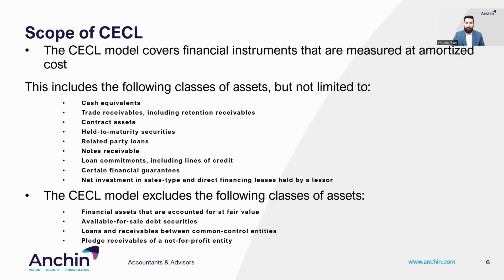Although the new standard was originally intended to address issues with credit losses related to financial instruments held by financial institutions, it actually impacts all financial assets measured at amortized cost. This includes cash equivalents, trade receivables, contract assets, held-to-maturity securities, related party loans, notes receivable, loan commitments, certain financial guarantees, and net investment in sales-type or direct financing leases held by a lessor.